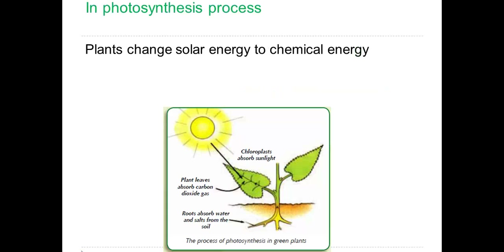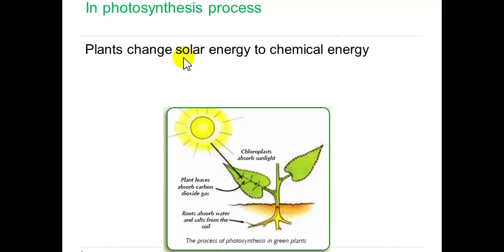In the photosynthesis process, plants transfer energy from solar energy into chemical energy — that is, plants change solar energy, or light energy, to chemical energy. Chemical energy means starches or carbohydrates. We will study this transformation further in Unit 2.